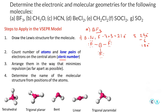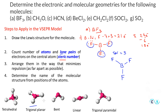Now for step 2, we count the atoms and lone pairs on the central atom. Carbon has 3 fluorine atoms and no lone pairs, giving a steric number of 3. To arrange 3 units as far apart as possible, we get trigonal planar geometry with 120-degree angles. Both the electronic geometry and the molecular geometry are trigonal planar because there are no lone pairs on boron.